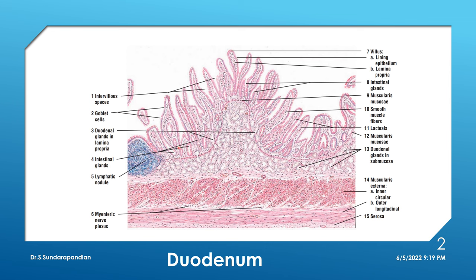If you see the lining epithelium, similar to the stomach, it is simple columnar epithelium. In those columnar cells there will be microvilli, which also increase the surface area for better absorption. In addition to the regular columnar cells, in between you can make out goblet cells — unicellular glands that secrete mucus.